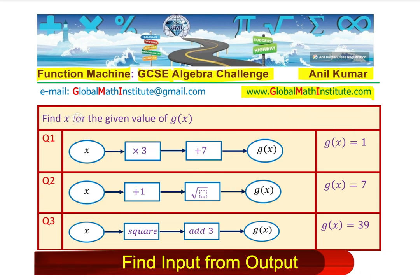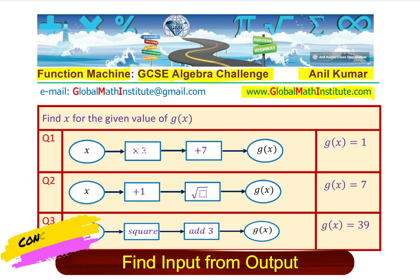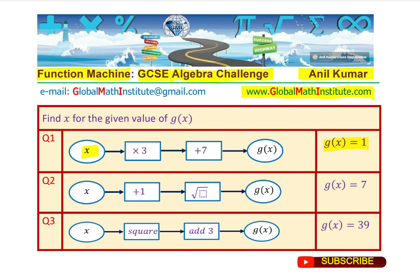The questions are: find x for the given value of g(x). Question number 1, x times 3 plus 7 is g(x). g(x) is given to you as 1. That is how you have to read the question. Where given the value of g(x), you have to find the value of x. You can pause the video and answer this question.